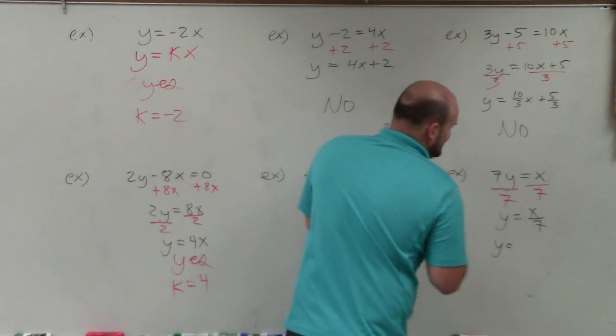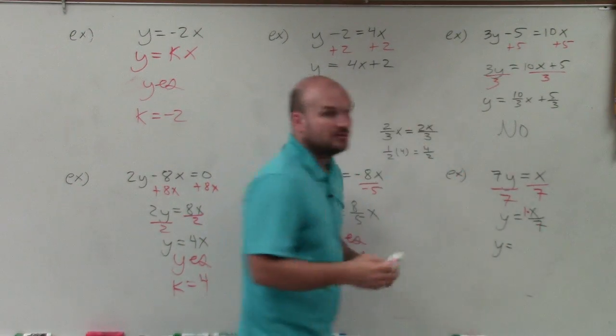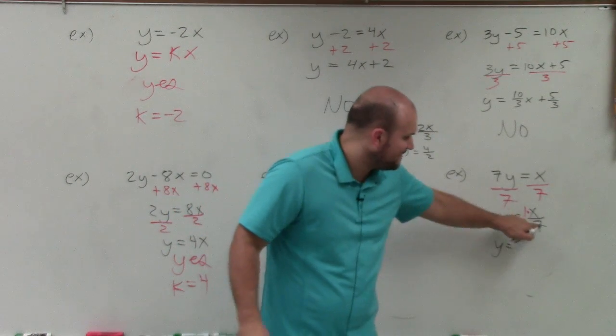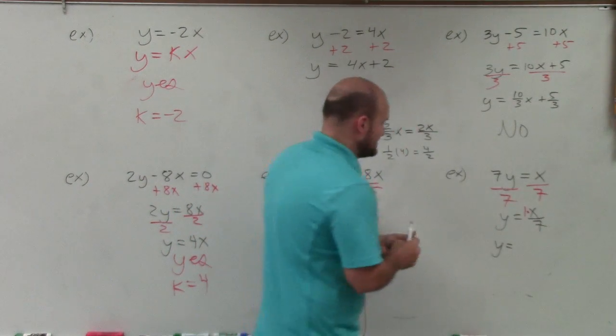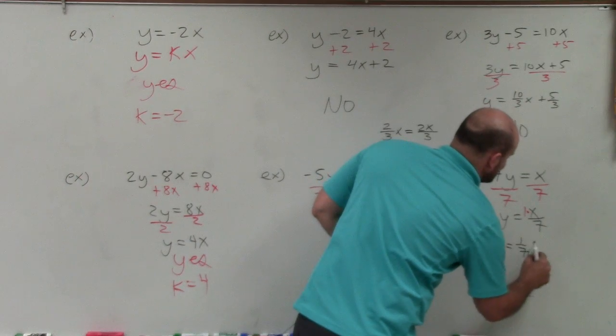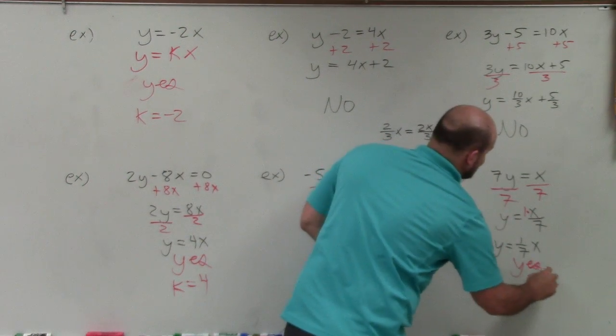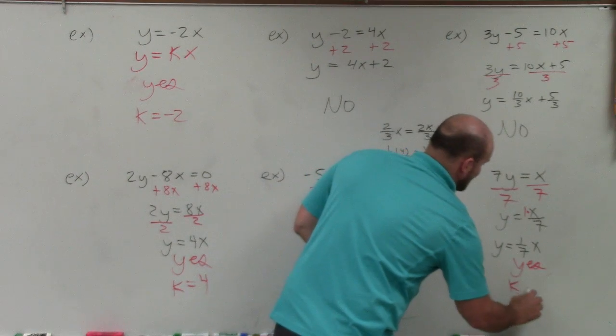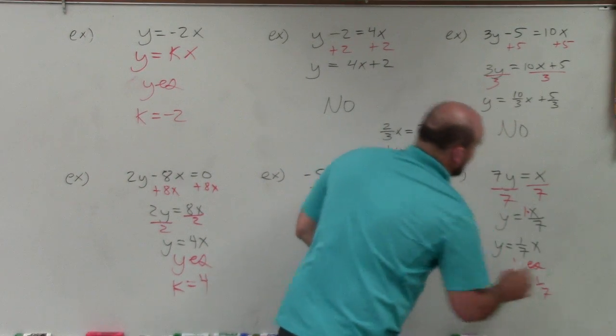So really, I can rewrite this, because basically, there's a 1 right here. Right? So basically, that's a 1 divided by 7 being multiplied by x. So in reality, this is 1 seventh times x. So yes, it is in direct variation form, where k is equal to 1 seventh.